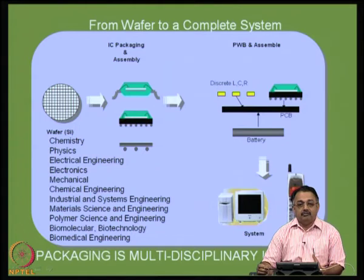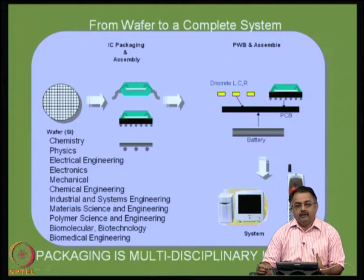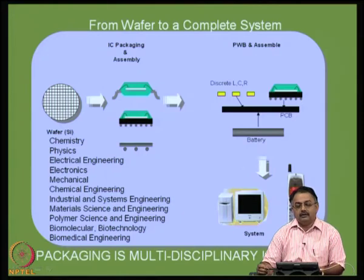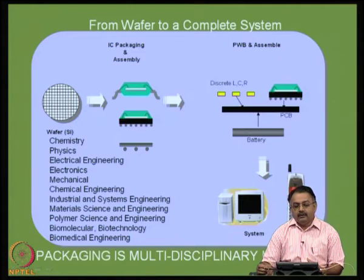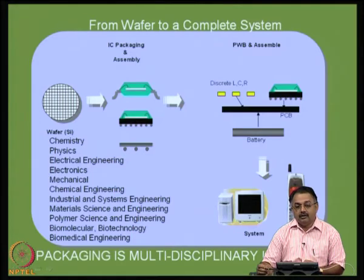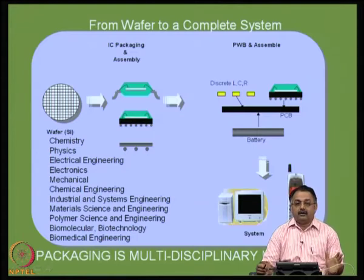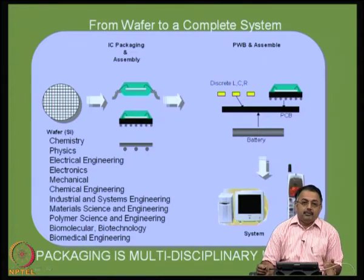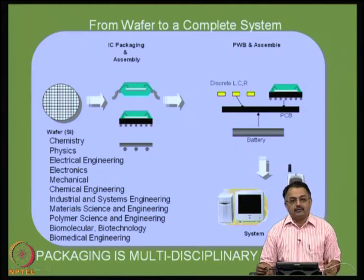In some cars, for example, there can be under the hood something like 50 to 55 microprocessors running, giving you various information. It can be automobiles, power systems, space electronics, avionics, aerospace. Handheld products are the major contributors to the electronics market. If you look at the total electronics market, handheld products occupy a very important position — a very large market share.